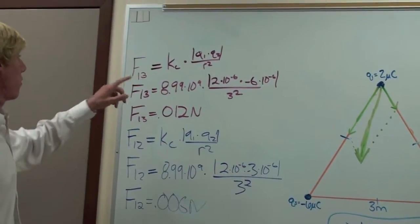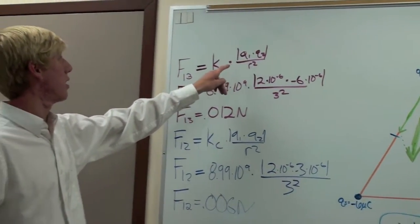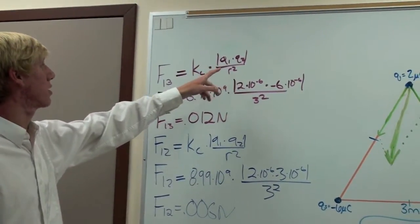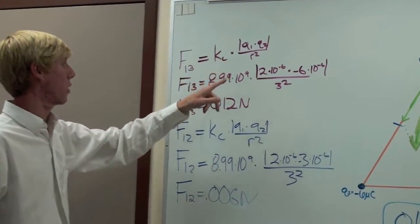So to start off, you use the formula Kc times the absolute value of Q1 times Q3 over R squared.